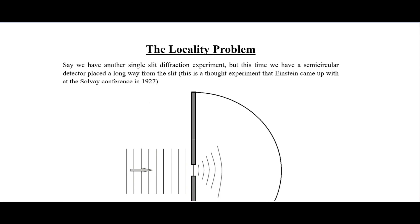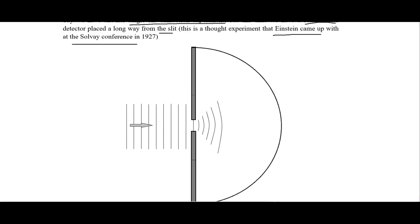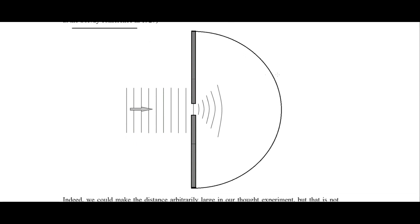Say we have a single slit diffraction experiment, but this time we have a semicircular detector placed a long way away from the slit, and we can also say that there is a vacuum inside. This is the thought experiment that Einstein came up with at the Solvay conference in 1927, and we have a setup that looks like this.